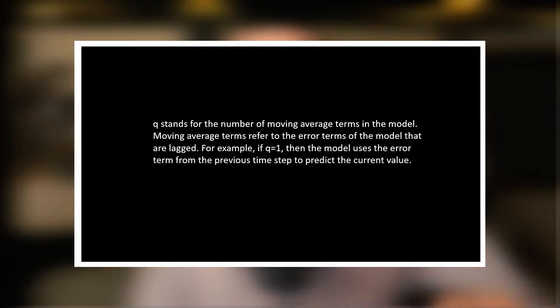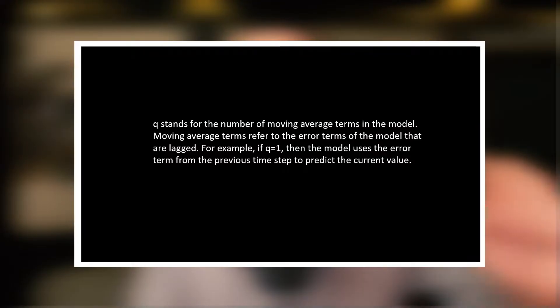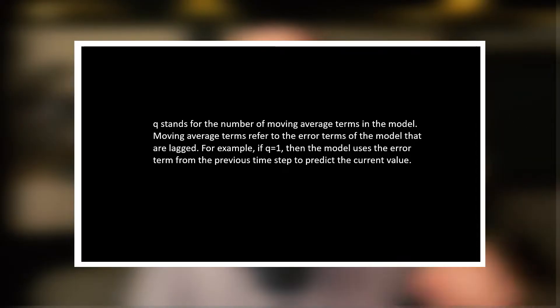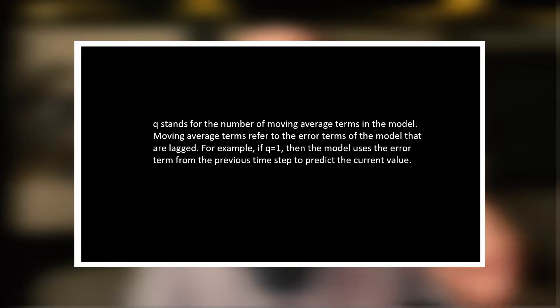Q stands for the number of moving average terms in a model. Moving average terms refer to the error terms of the model that are lagged. For example, if Q equals one, then the model uses the error term from the previous time step to predict the current value.